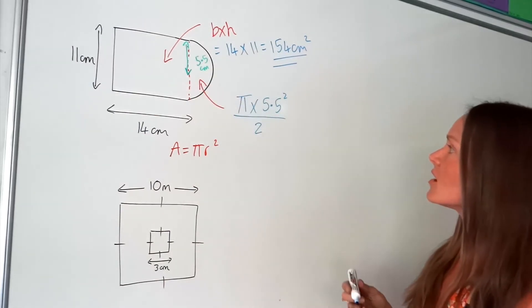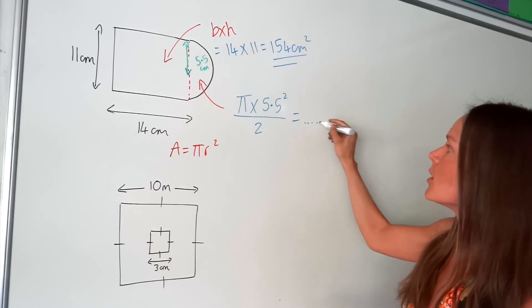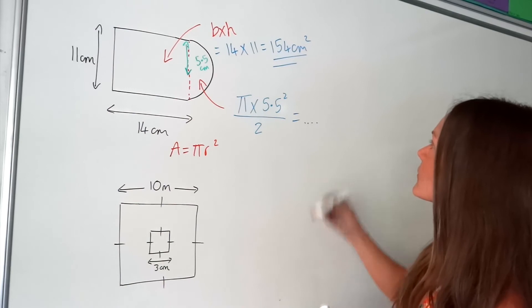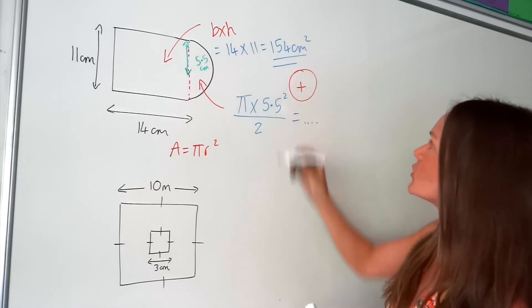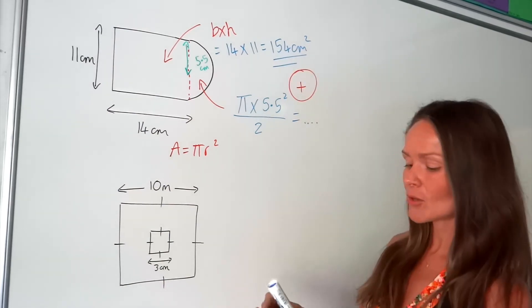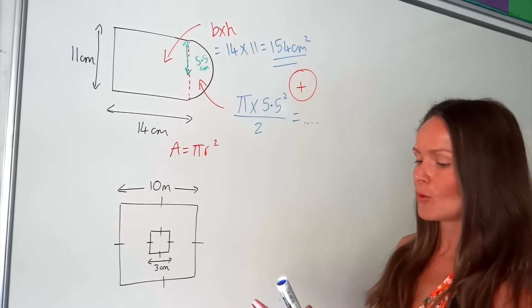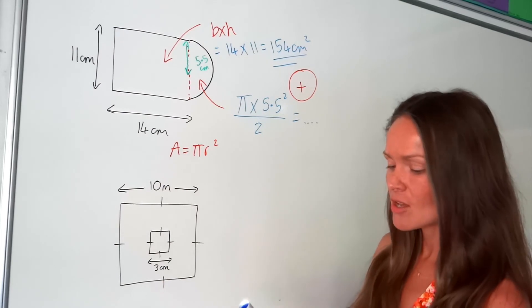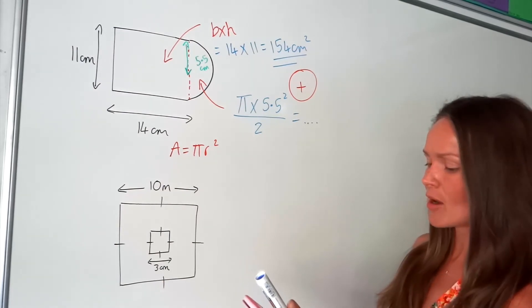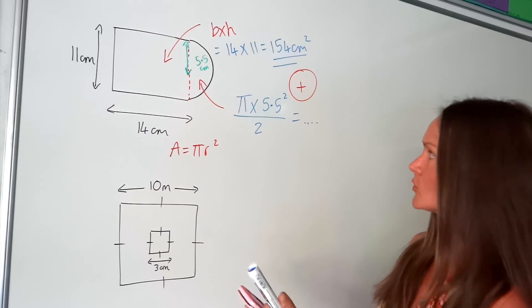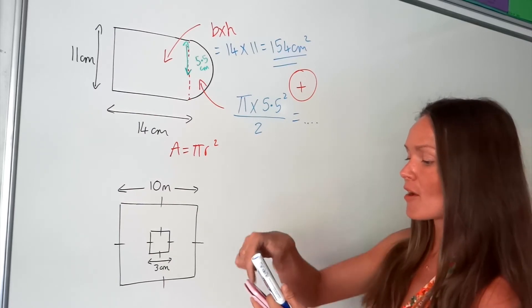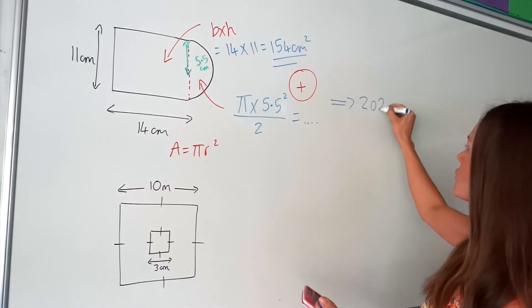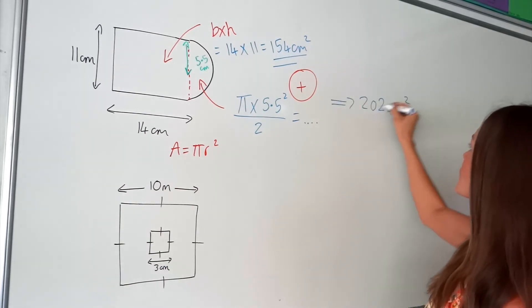So the last step — I'm going to put it into the calculator all in one go and write in 154 plus, and now I'm going to type in that fraction. So I've got pi multiplied by 5.5 squared over 2, which gives me, if I round to three significant figures, 202 centimetres squared.